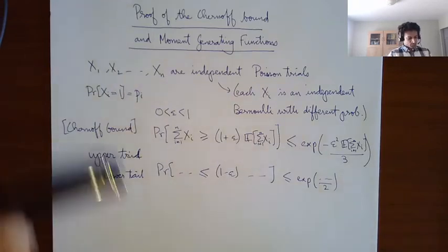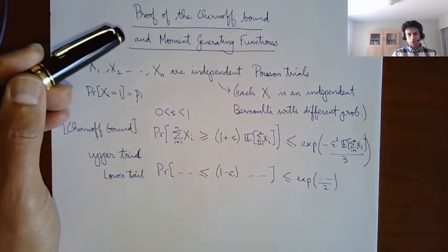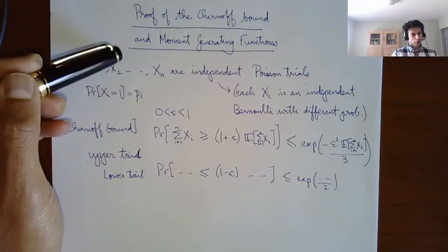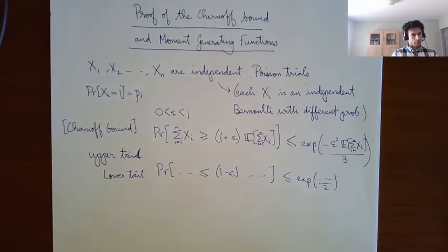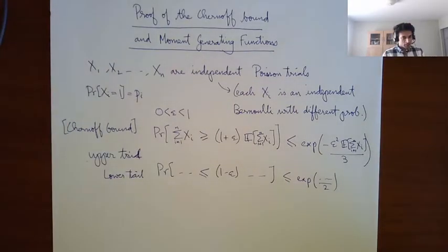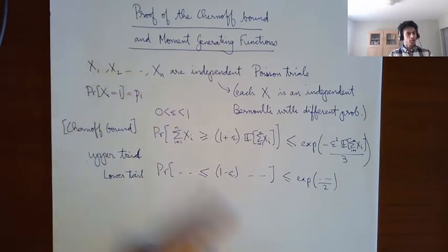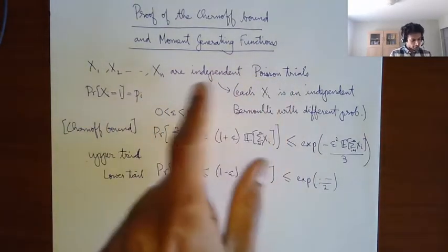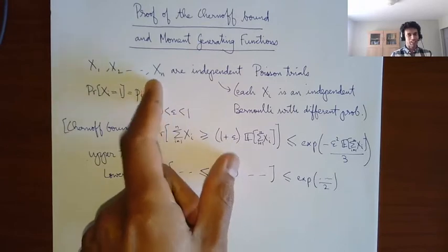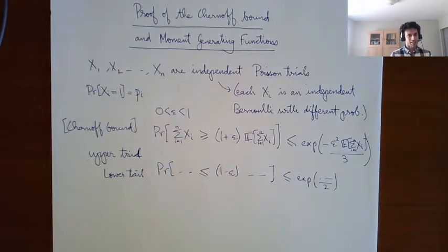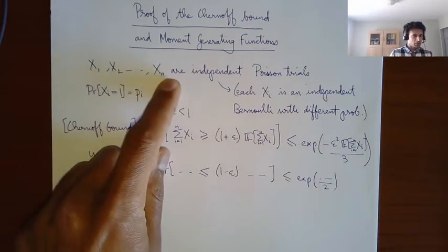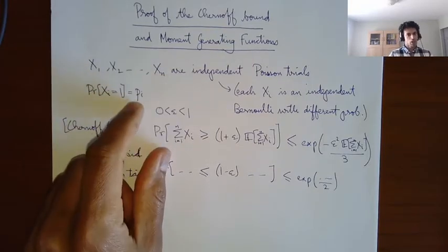Today we're going to do the proof of the Chernoff bound and moment-generating functions. Let me describe the basic setup: x1 to xn are independent Poisson trials. This terminology means each xi is an independent Bernoulli with a different probability — each represents a coin toss with a different heads probability.